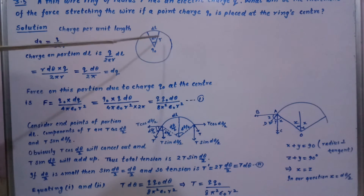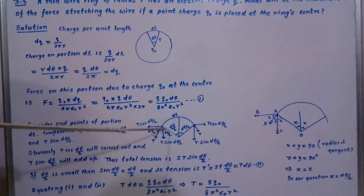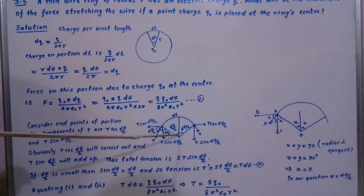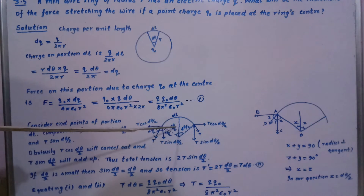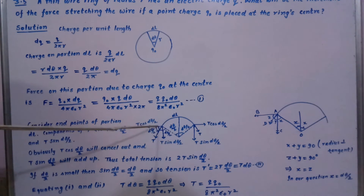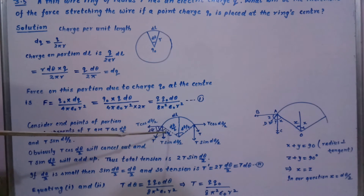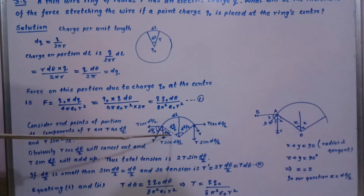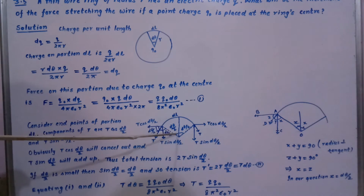Now we consider an enlarged view of portion DL. The tension acts along the tangential direction at each endpoint. We divide the subtended angle so each half is dθ/2. Since the radius is perpendicular to the tangent, this angle is 90 degrees. Therefore the angle between the tension and the inward radial direction is dθ/2 at each end.